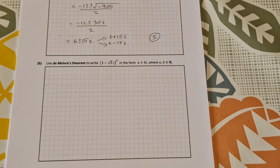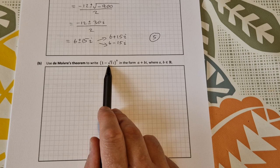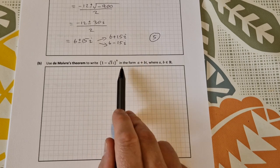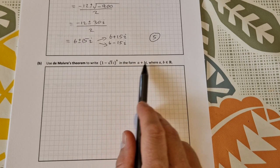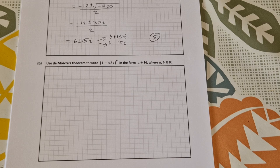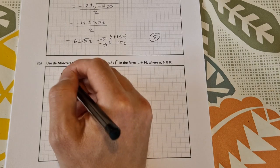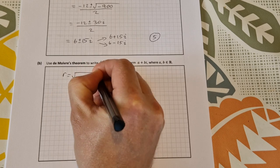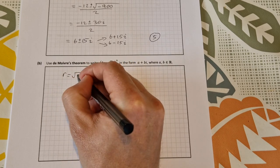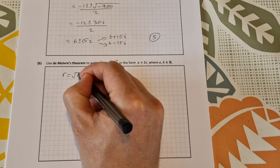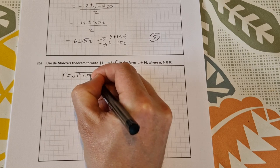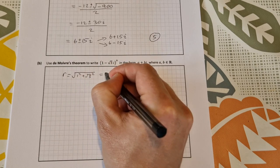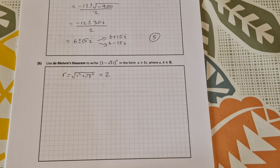Part B, they're asking us to use De Moivre's theorem to write 1 minus root 3i to the power of 9 in rectangular form in the form a plus bi. So we need to work out r and theta for this. So to work out r, first of all, that's the square root of a squared plus b squared. So that's the square root of 1 squared plus root 3 squared, which works out to be 2. So r is equal to 2.